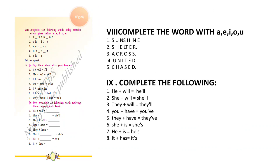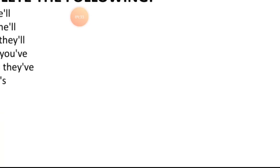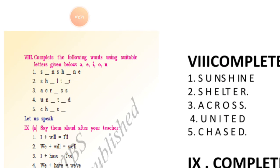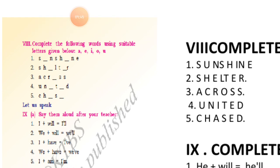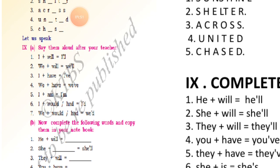Page number seven: complete the following words using suitable vowels — a, e, i, o, u — given below. The answers are: sunshine, shelter, across, united, chased. Then there are contractions: I plus will = I'll, we plus will = we'll, I plus have = I've, we plus have = we've. Also: I plus am = I'm, I plus would or had = I'd, we plus would = we'd.